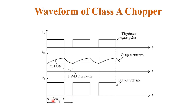This chopping cycle repeats: when the chopper is on, the inductor starts charging and the output voltage equals VS; when the chopper is off, the inductor releases its energy and the output voltage equals zero. This is the waveform of class A chopper.